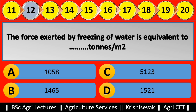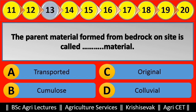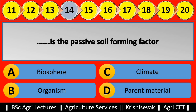Question 13: The parent material formed from bedrock on site is called blank material. Options are: (a) Transported, (b) Cumulose, (c) Original, (d) Colluvial. Right answer is Original material, option C.